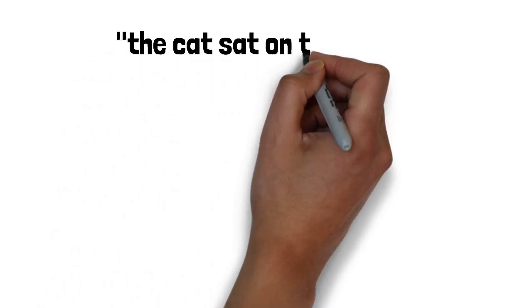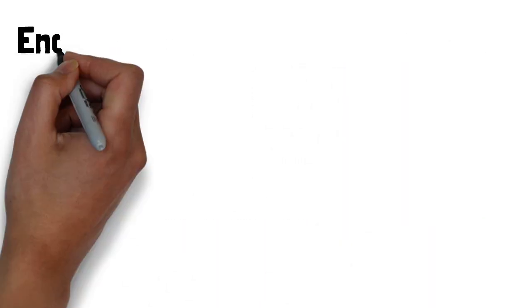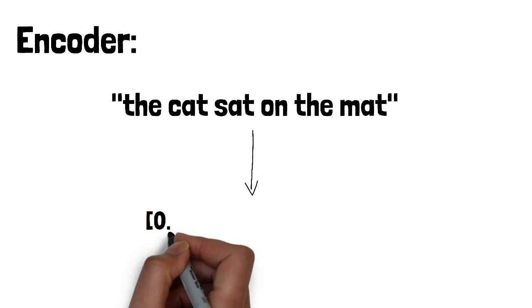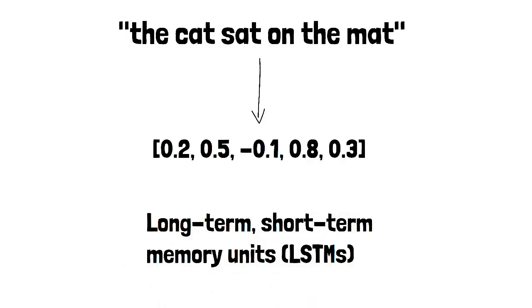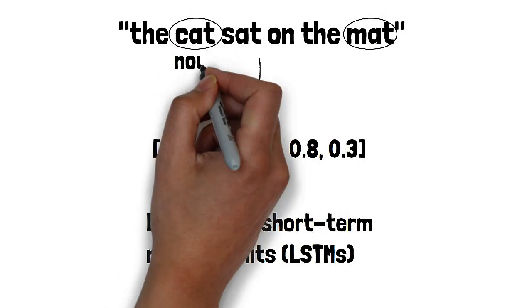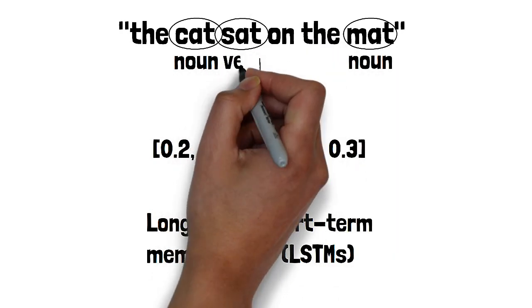The magic lies in how the encoder and decoder work together. Let's say our eventual goal is to convert 'the cat sat on the mat' to its French version. The encoder's task is to take the input sentence and convert it into a meaningful numerical representation for the machine. Encoders utilize a technology called LSTMs, or long short-term memory units, to deal with different length inputs and outputs. It analyzes the input sentence word by word and extracts important information, context, and relationships — for example, recognizing that 'cat' and 'mat' are nouns and 'sat' is a verb. The encoder condenses this information into a representation such as a numerical vector or a series of hidden states.